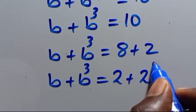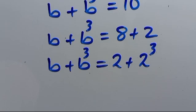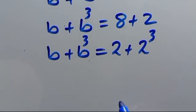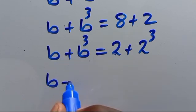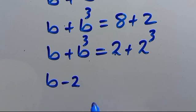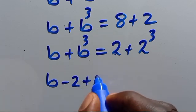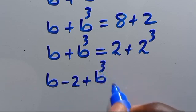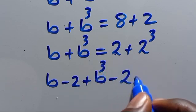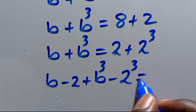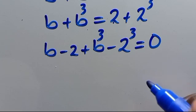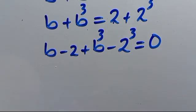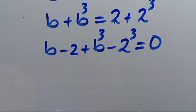So let's rearrange this expression. We can have B minus 2, then plus B to the power of 3 minus 2 to the power of 3. Let's say this side equals zero. Then let us recall the difference of two cubes.